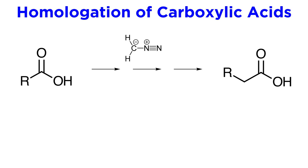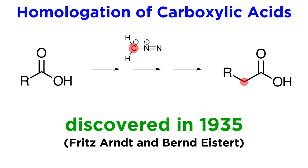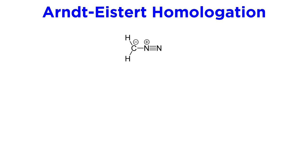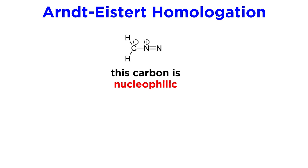Another important application of diazomethane is the homologation of carboxylic acids by one carbon atom. What this means is that diazomethane can insert a carbon between the carboxyl carbon and the adjacent carbon, to make the carbon chain one longer. This amazing reaction was discovered by two German chemists in 1935, Fritz Arndt and Berndt-Eistert, hence it is called the Arndt-Eistert homologation. Because one of the resonance structures for diazomethane bears a formal negative charge on the carbon, the composite will still bear a partial negative charge at this location, and thus this carbon is somewhat nucleophilic.